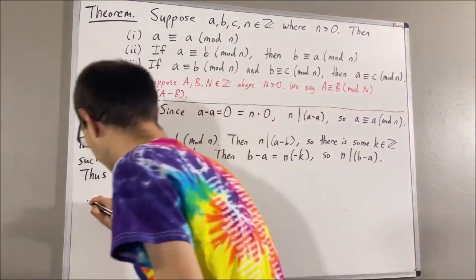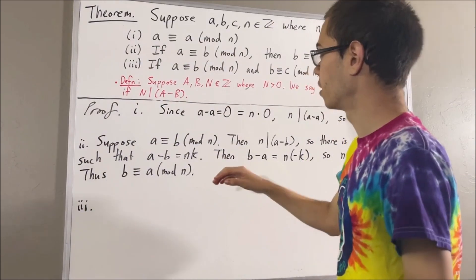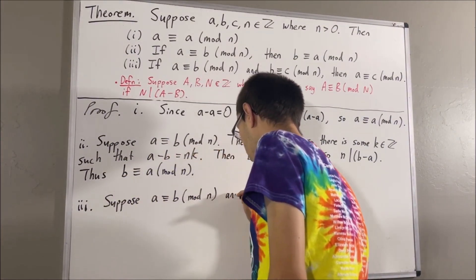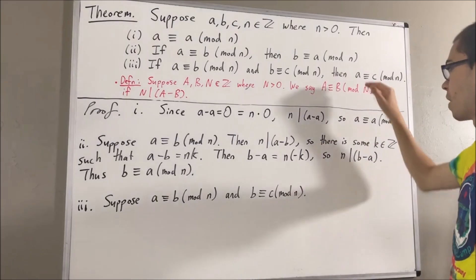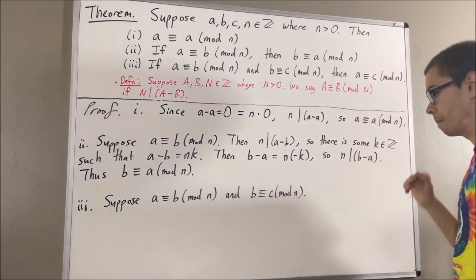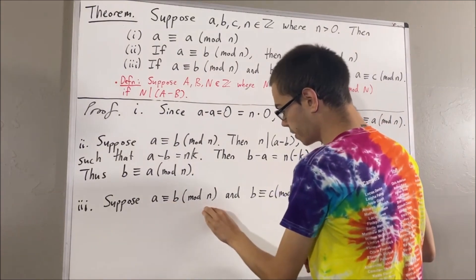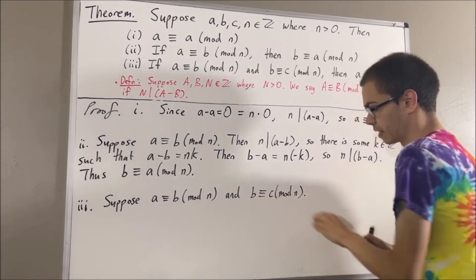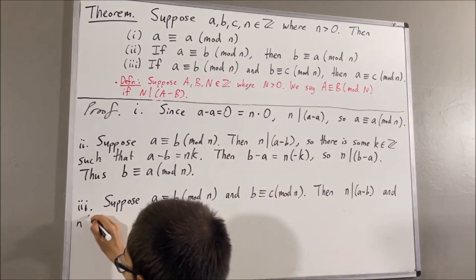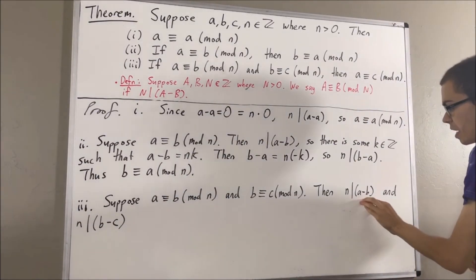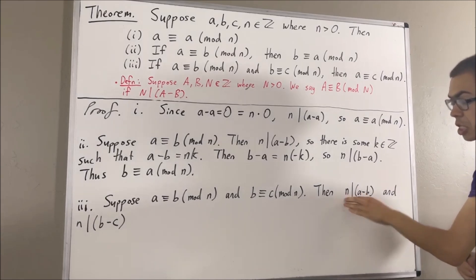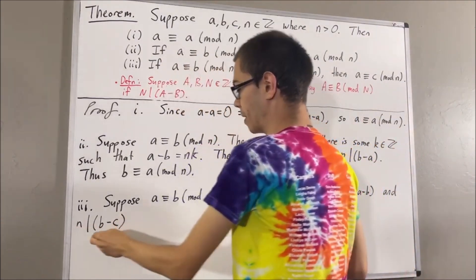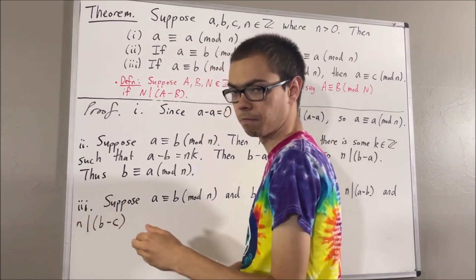Now, let's prove our third fact. To prove our third fact, let's suppose a is congruent to b modulo n and b is congruent to c modulo n. From here, we want to show that a is congruent to c modulo n. Since a is congruent to b modulo n, this tells us that n divides a minus b. Since b is congruent to c modulo n, this tells us that n divides b minus c. Now, since n divides a minus b, this means that a minus b is equal to n times some integer. I'll call that integer p. And since n divides b minus c, this means that b minus c is equal to n times some integer. I'll call that integer q.